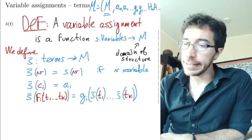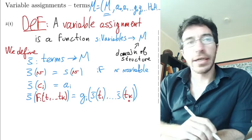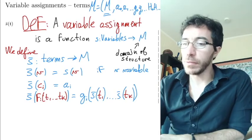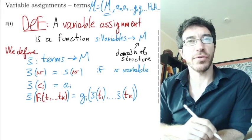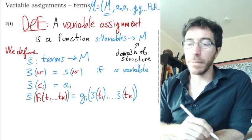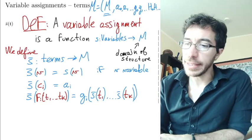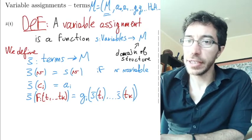And then the way we build it is we apply this g that is the interpretation of the symbol right there to the terms t1 up to the interpretations of these terms that we have before.